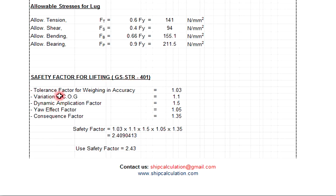The criteria: tolerance factor for weighing accuracy is 1.03, variation of COG is 1.1, dynamic amplification factor is 1.5, yaw effect factor is 1.05, consequence factor is 1.35. Total is 2.43.